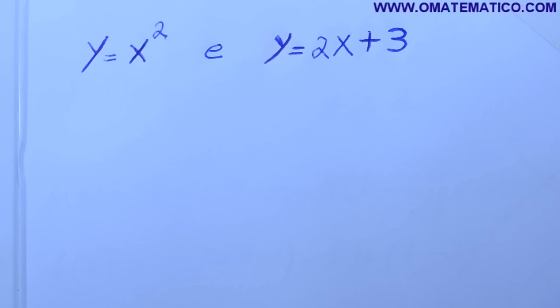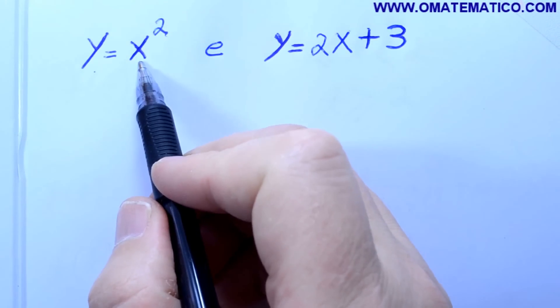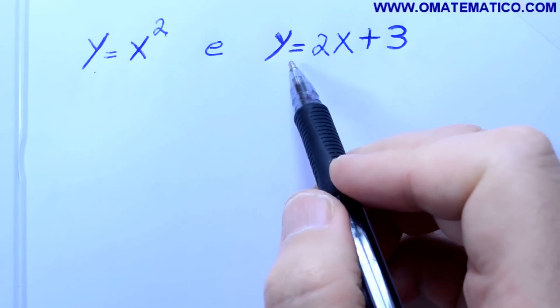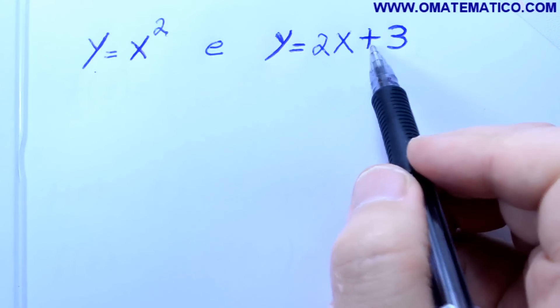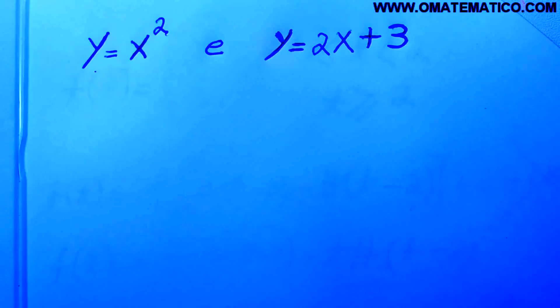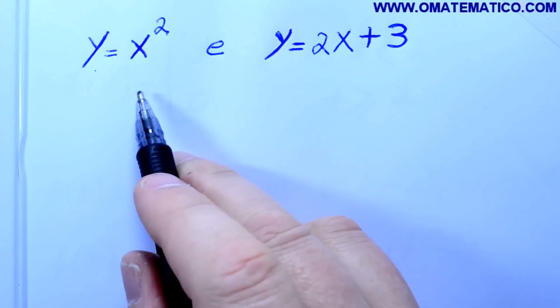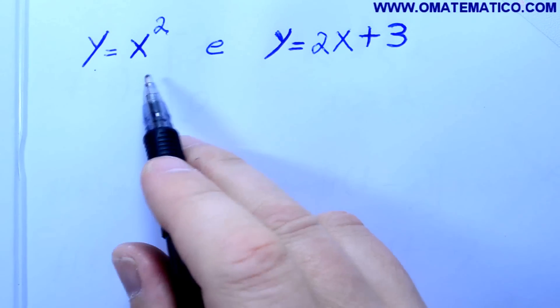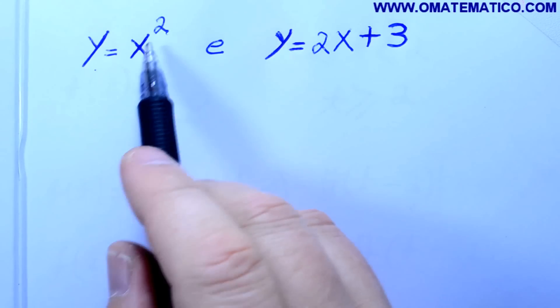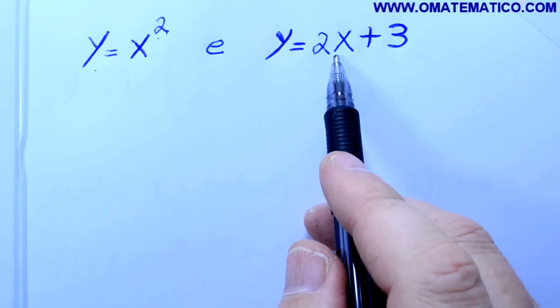Calcule a área limitada pelas curvas y igual a x ao quadrado e y igual a 2x mais 3. Então, eu quero saber qual a área limitada por essas duas curvas. Primeiro, é bom fazer um desenho para enxergar a área. Então, eu vou achar o ponto de interseção das duas curvas. Estou vendo que x ao quadrado é uma parábola e isso aqui é uma reta.